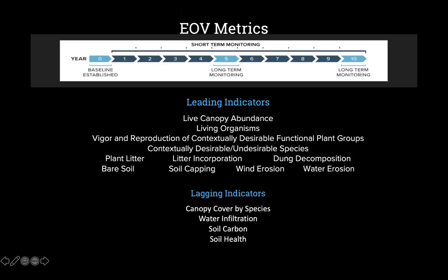We look at what the litter is doing on the soil surface, how the dung is decomposing. The really important indicators are how much bare soil, soil capping, and erosion you have. When we do the long-term monitoring, we also look at the lagging indicators of canopy cover by species — we actually count on the line-point transect exactly how many of different species we see. We also look in a flexible area to see if there are species we haven't yet discovered on our line point. And we look at soil health and water infiltration.